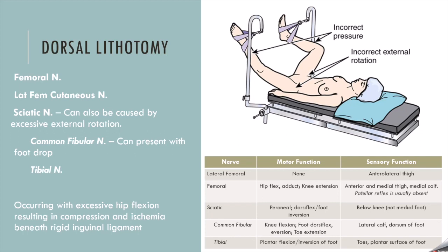The next surgical consideration is patient positioning — dorsal lithotomy. There are three types: high, standard, and low, referring to the amount of hip flexion. In high lithotomy, you have a high degree of hip flexion. The picture on the right shows candy canes holding up the legs; boots are also used depending on the institution. The femoral and lateral femoral cutaneous nerves pass underneath the inguinal ligament, and with hip flexion, you can decrease blood flow and nerve sensation by compressing them underneath that rigid inguinal ligament structure.